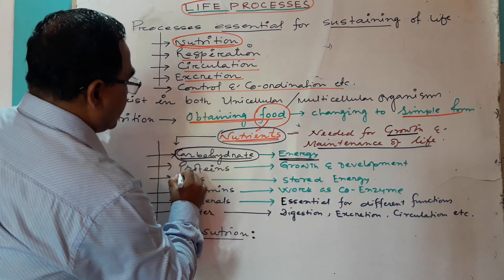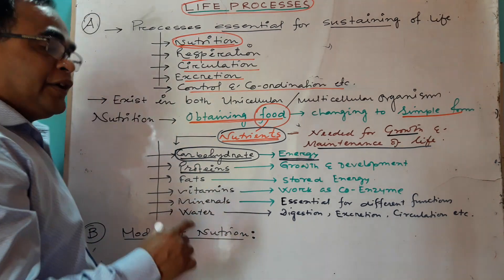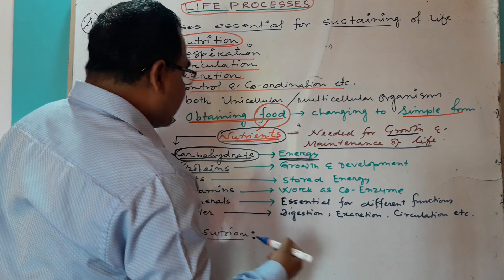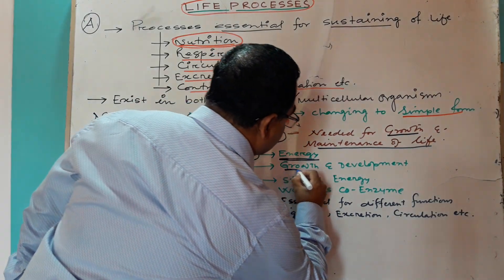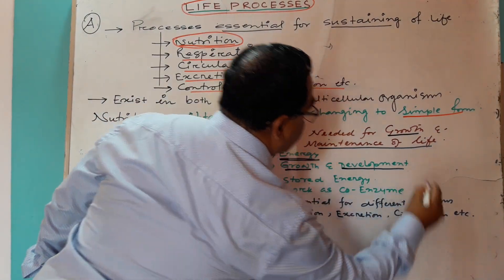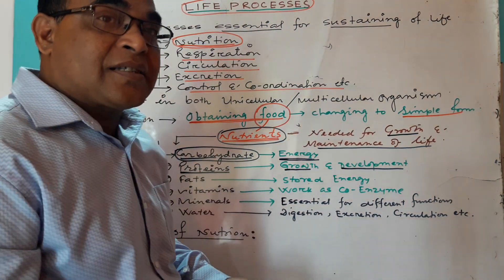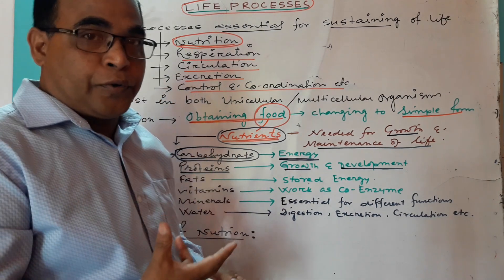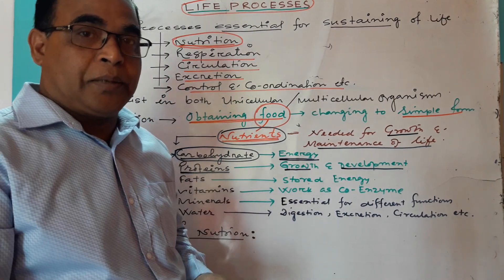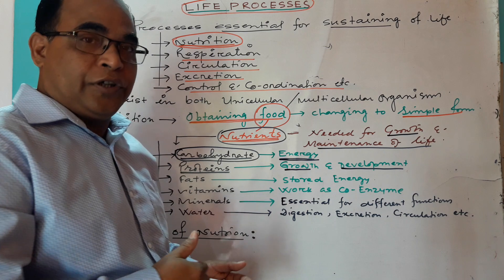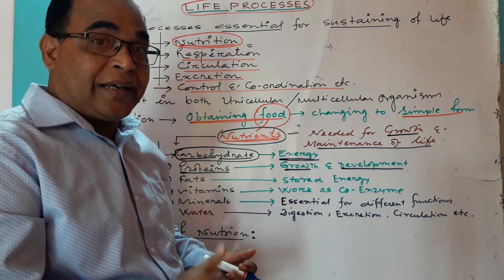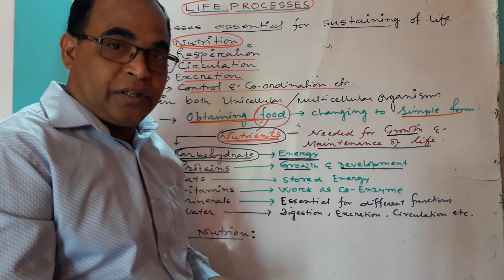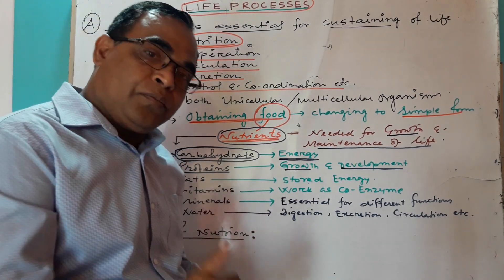The next nutrient is protein, which is again very important. What is the importance of protein? Protein provides us growth and development. Protein is a structural component of our body — muscle protein, bone protein, blood protein. Antibodies which fight against disease-causing pathogens are protein. Enzymes are protein. Hormones are protein. So protein is very important.